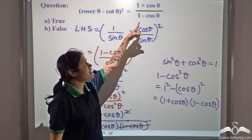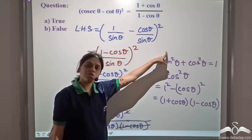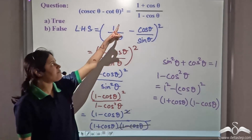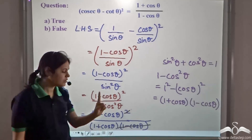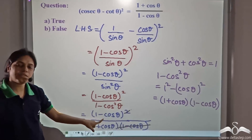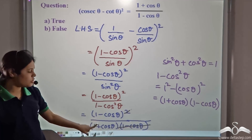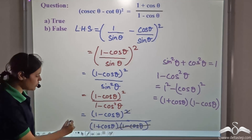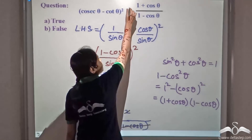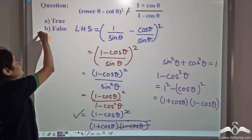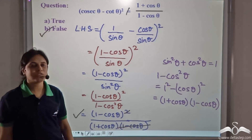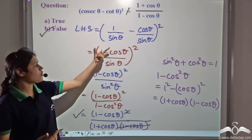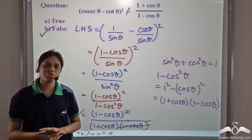The right hand side is (1 + cosθ) / (1 − cosθ). This is not the same as what we got — we have minus in the numerator and plus in the denominator, whereas the RHS has plus in the numerator and minus in the denominator. So the left hand side equals (1 − cosθ)/(1 + cosθ), not (1 + cosθ)/(1 − cosθ). Hence, it is false. That is how you can solve expressions involving trigonometric ratios.